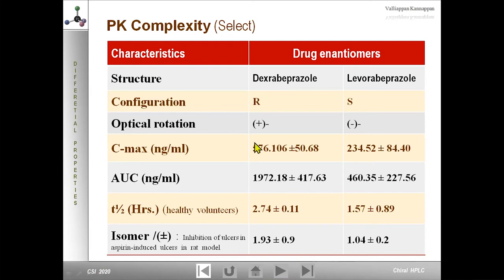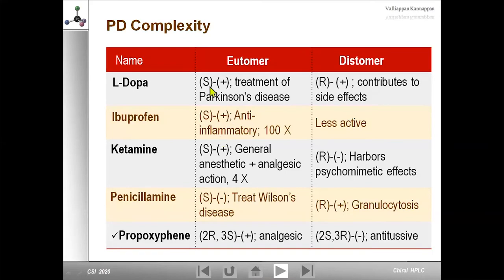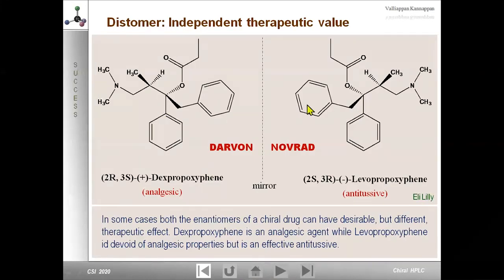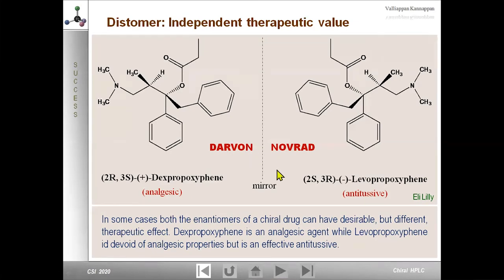Thalidomide was introduced in the world market in 1956 and given to pregnant women during the early trimesters to control nausea and vomiting. Babies born had a condition called phocomelia — a teratogenic effect with deformed hands and limbs — the so-called 'thalidomide babies.' The drug was withdrawn, and enantiomers were resolved in 1970. Thalidomide's tragedy led to a profound change in how we look at chiral molecules. Today, enantiomers are treated as two different chemical species — not two forms of the same species — and are treated as polypharmacy or fixed drug combinations.